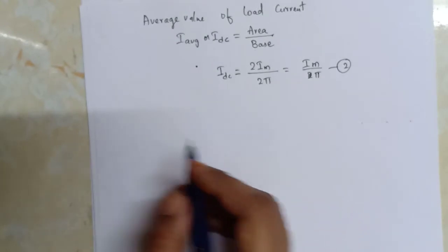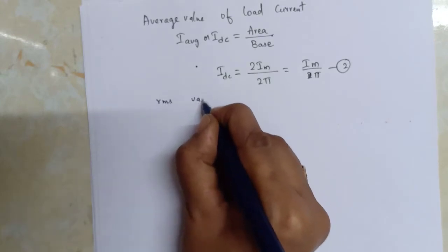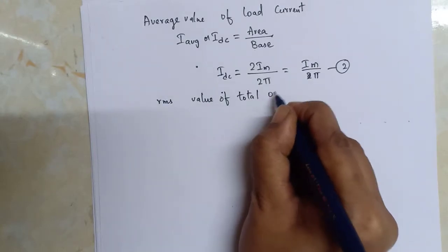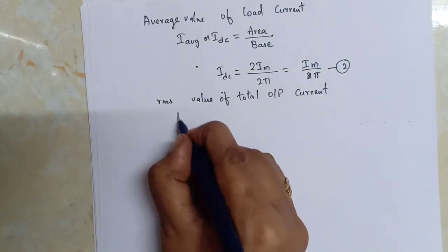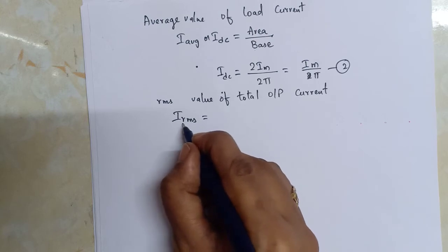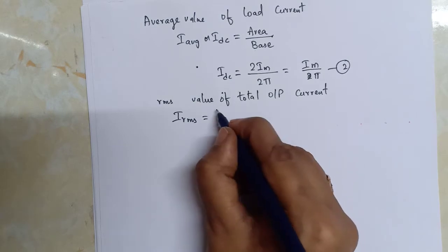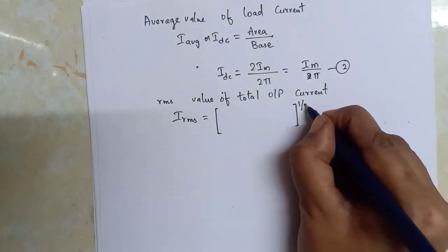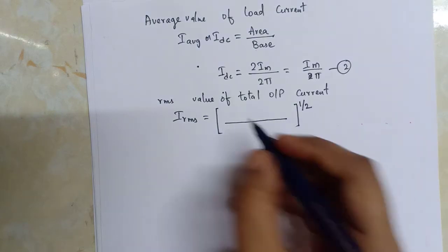Next, let us calculate the RMS value of the total output current, denoted as Irms. RMS stands for root mean square value. To write the expression, we first write the root, then the mean — that is, the average over the curve.